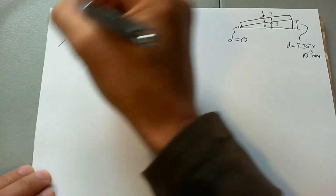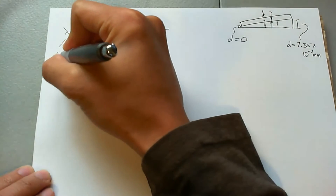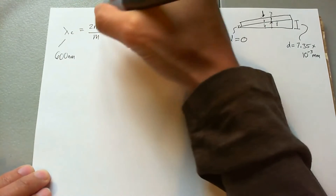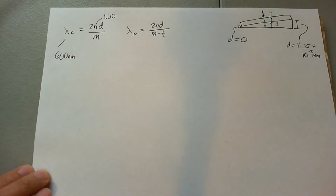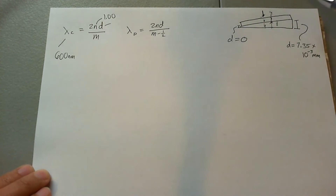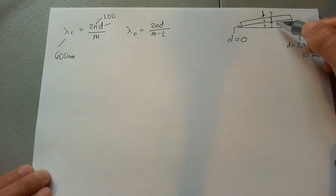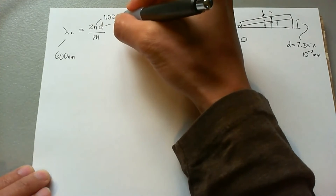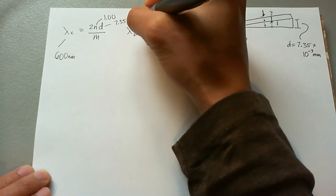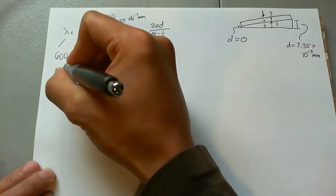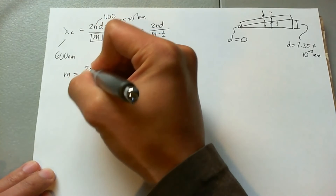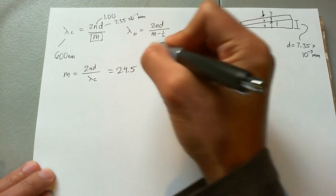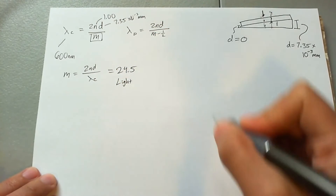We set lambda as the incoming light wave: 600 nanometers. n is the index of refraction of the air between the two glass plates, and d is the maximum distance the wave travels through, which is 7.35 times 10 to the negative 3 millimeters. We need to find m. We see that m equals 2nd over lambda_c, and that gives us 24.5 modes of brightness, or constructive interference.